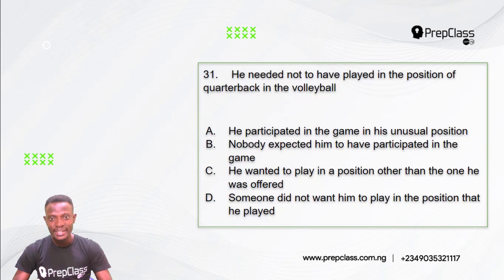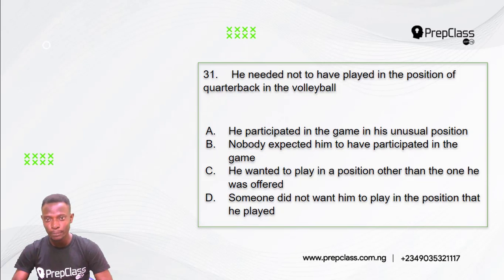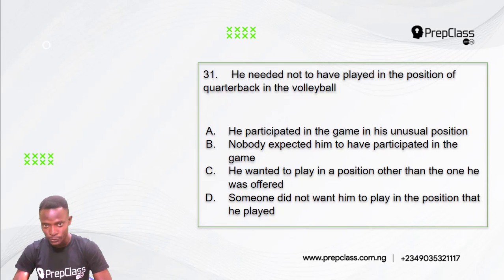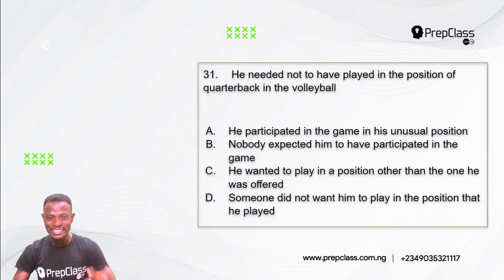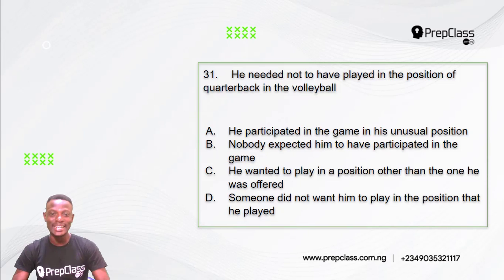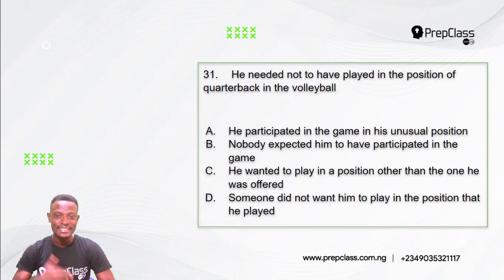Question 31: He needed not to have played in the position of quarterback in the volleyball. Option A: He participated in the game in his unusual position. Option B: Nobody expected him to have participated in the game. Option C: He wanted to play in a position other than the one he was offered. Option D: Someone did not want him to play in the position that he played. So which of these explains best the information conveyed in this sentence?